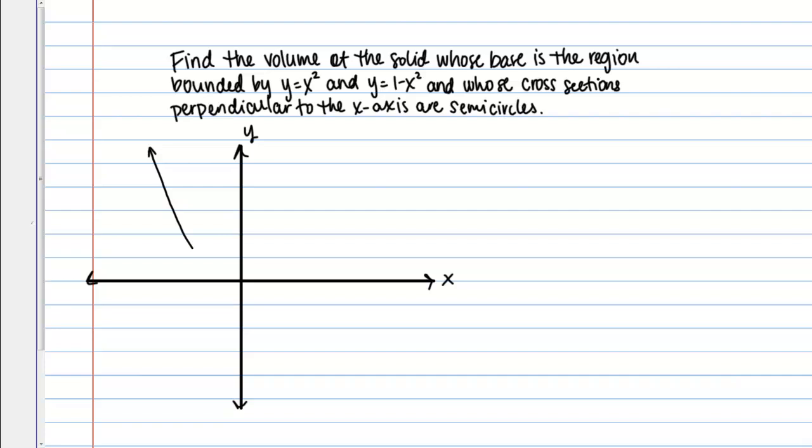So without drawing a lot of detail in, just something like this. And then we know that 1 minus X squared should be a downward facing parabola with its vertex here at Y equals 1. So roughly something like this.